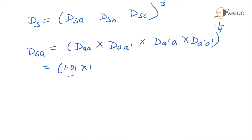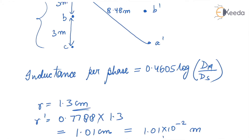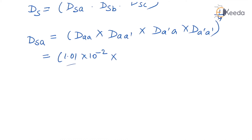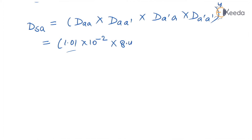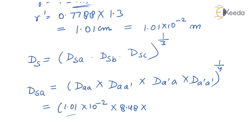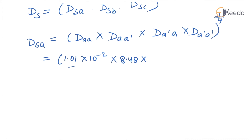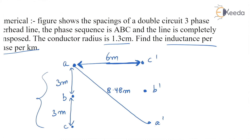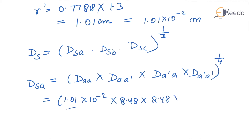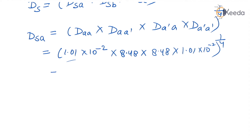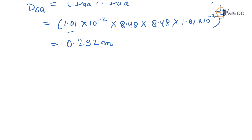So DSa equals (1.01 × 10⁻² × 8.48 × 8.48 × 8.48 × 1.01 × 10⁻²) to the power 1 by 4. On calculating this we get DSa equals 0.292 metres.